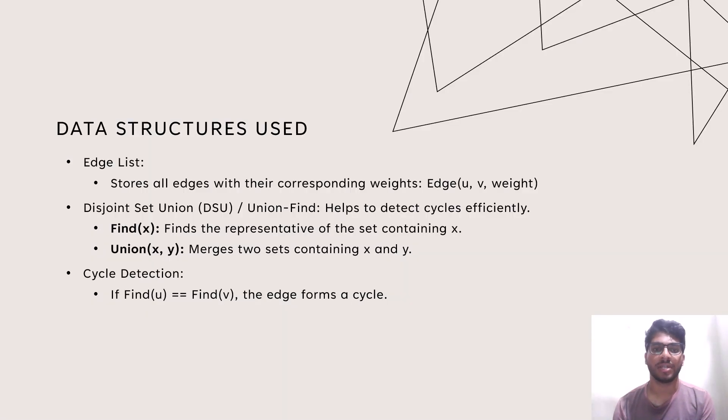Data Structures Used. Edge List stores all edges with their corresponding weights. Disjoint set union or union-find helps to detect cycles efficiently.